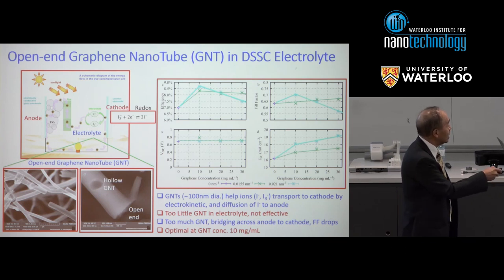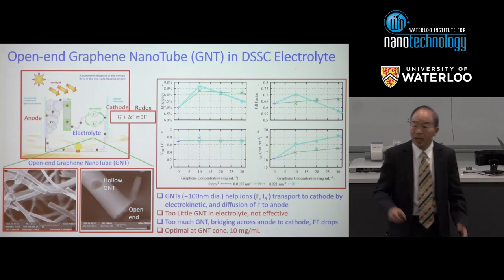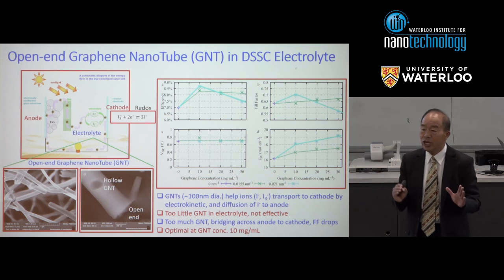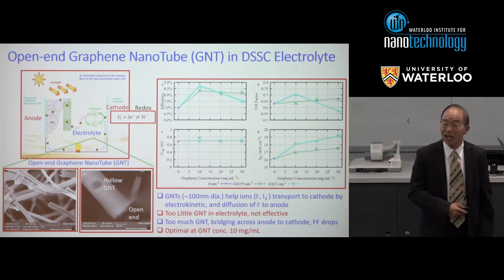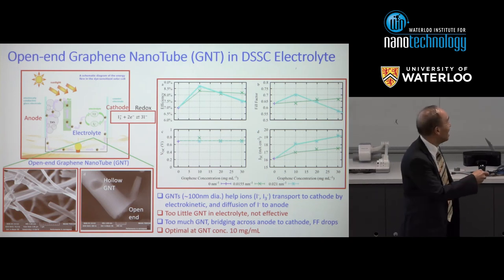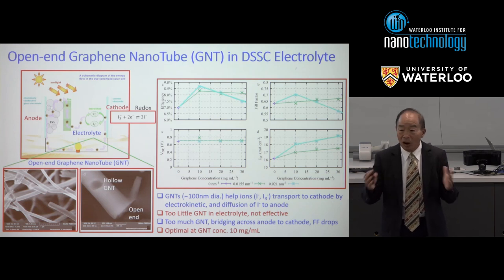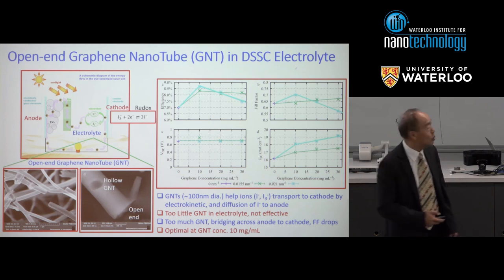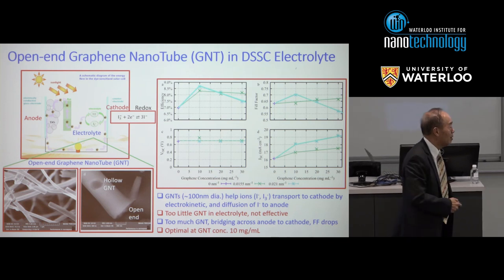In the experiment, PCE is plotted as a function of GNT amount. If too little GNT, it's not effective; if too much, it short-circuits from anode to cathode. So there is an optimal amount of carbon — this represents the optimization.